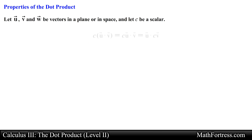The third property states that scalar c times (u dot v) equals (c times u) dot v, which also equals u dot (c times v). Essentially we can multiply the constant to any vector and then compute the dot product; the end result is that one of the vectors gets scaled by a factor of c.